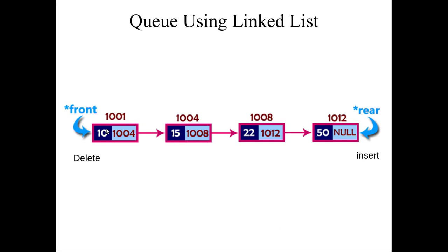If you want to create the queue using a linked list, you should remember how deletion and insertion are done. In a queue using a linked list, the front end — the head — will be used for deletion, and the rear end — the final element — will be used for insertion. The null pointer represents the position where the next data will be inserted.